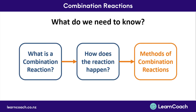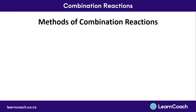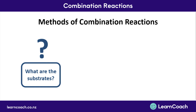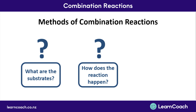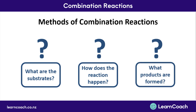Now we're going to move on to methods of combination reactions. There are three things we need to keep in mind when describing a method for a combination reaction. What are the substrates in the reaction — that is, the substances we start with? How does the reaction occur — is it spontaneous, or does it need light or heat energy? And what are the products that are formed — the substances we are left with at the end of the reaction?